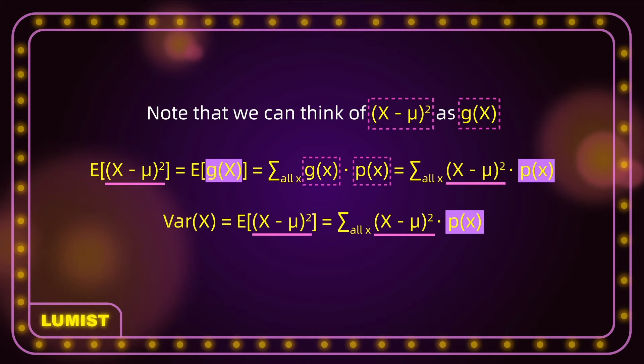To calculate variance, we find the difference between every possible x and the expectation, square that distance, multiply by the probability that x occurs, and sum over all x values.